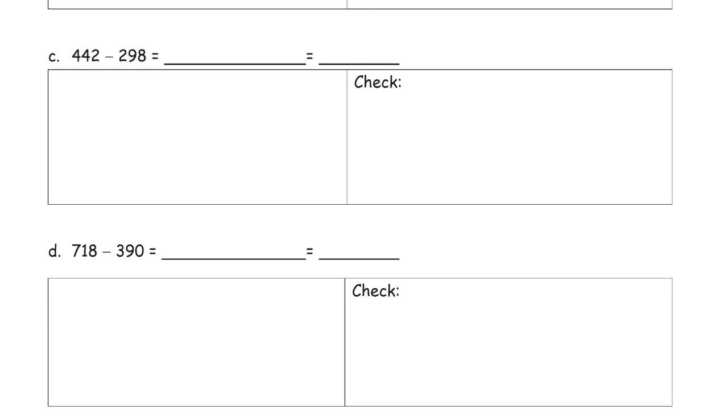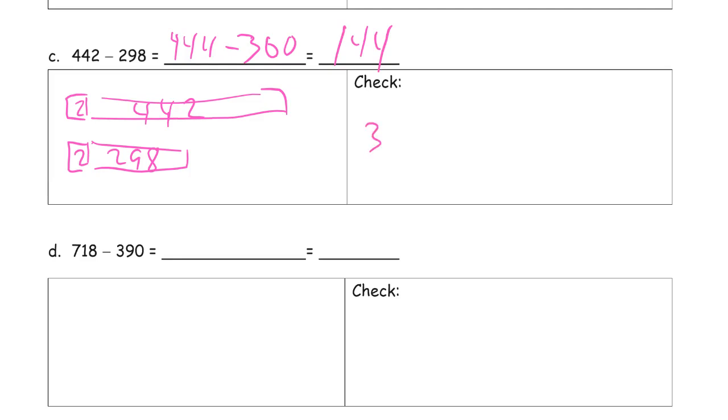442 minus 298. Let's draw the tape diagram first. 442, that's our minuend, and our subtrahend 298. That's only two away from 300. So I'm going to add two to both of these. So our new minuend is going to be, it's two more, so it's 444. And we're subtracting 300, which should leave us with 144. And now we're going to add our subtrahend, which is 300, to our difference 144, and we should get the 444 back. You see here we just, 3 plus 1, that's 400, and we just have the 44. And that matches.